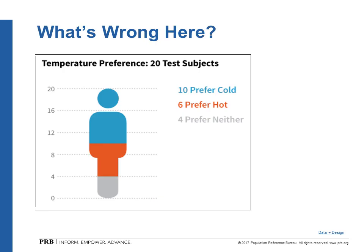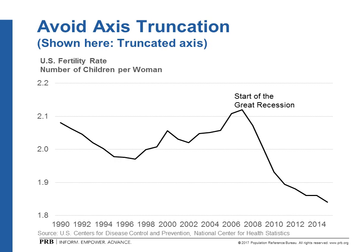Another example: a couple of things are right here. Jessica will talk more about selecting color, but I like that the colors align with what we'd think — blue represents cold, orangish-red represents hot, and gray is people with no preference. That part works. But it's really difficult for the eye to tell how much bigger the blue section is than the orange, especially because of this big gap where there's an empty space in the chart. So it's hard to compare those two groups. I would use a regular old stacked bar chart — it might not be as visually appealing, but it does a better job of telling the story.